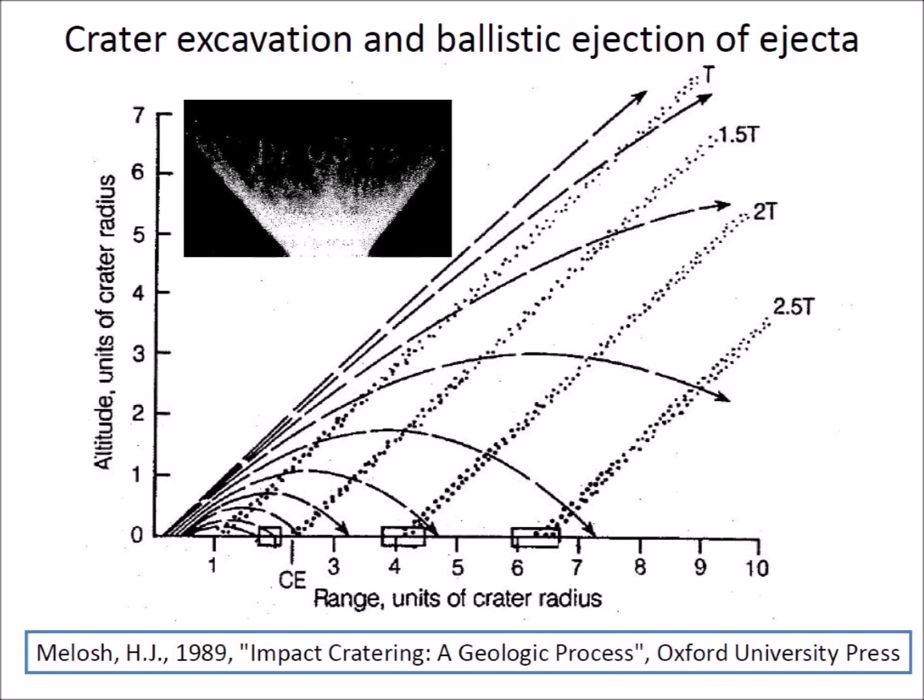falling nearer the crater rim. Because of the relationship between the position, time, and velocity of the ejection, the debris forms an ejecta curtain in the shape of an inverted cone that shifts outward across the target.